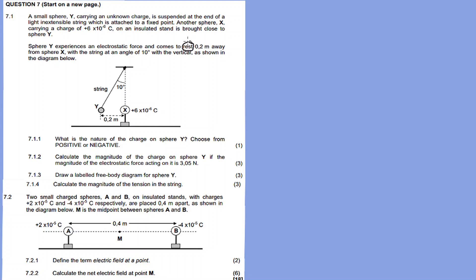Sphere Y experiences an electrostatic force and comes to rest. Due to the electrostatic force, Y moved to a position 0.2 meters away from sphere X, with the string at an angle of 10 degrees with the vertical, as shown in the diagram below.